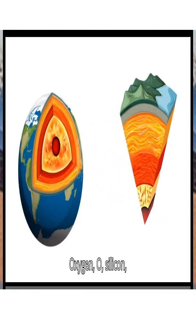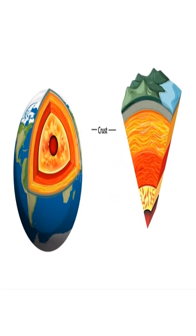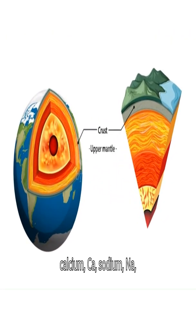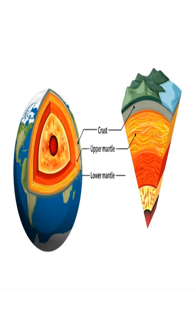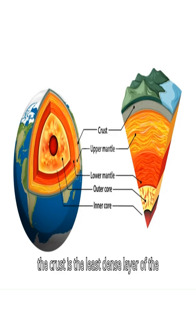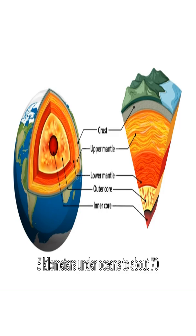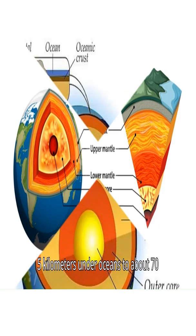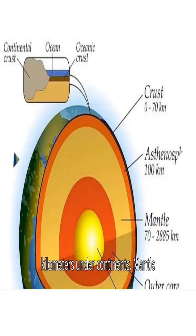Key elements in the crust include Oxygen (O), Silicon (Si), Aluminium (Al), Calcium (Ca), Sodium (Na), Potassium (K), Iron (Fe), and others. The crust is the least dense layer of the Earth, with thickness varying from about 5 kilometers under oceans to about 70 kilometers under continents.